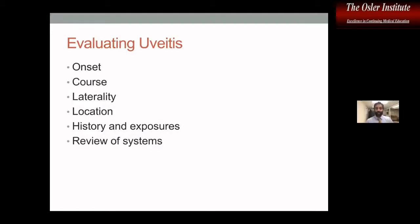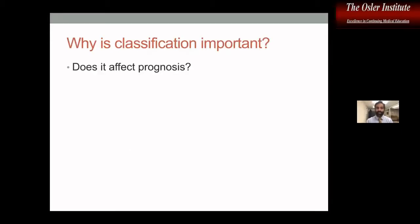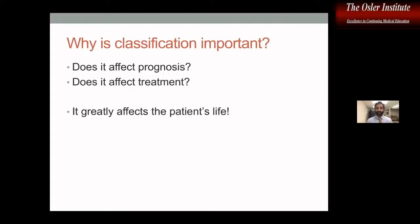When evaluating uveitis, we look at the onset, course, laterality, location, history, exposures, and review of systems. The last two are really important because they play a big role in our differential. After gathering all of this, we can formulate our differential, what tests we're going to get, and treatment. Classification affects prognosis, affects treatment, and greatly affects the patient's life — acute disease is very different than chronic disease that we'll be treating and managing all the time.